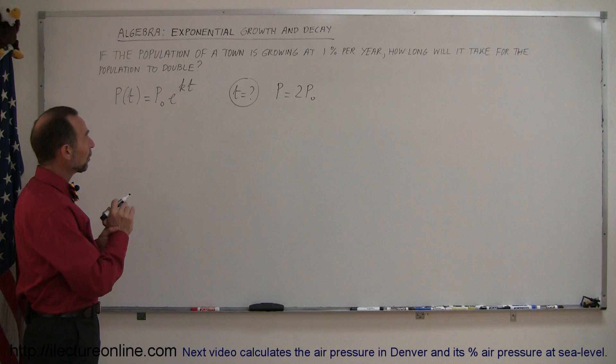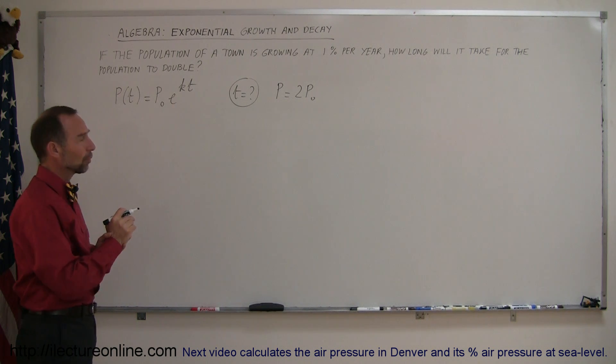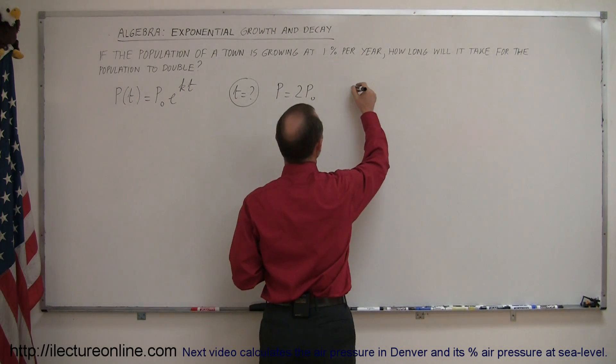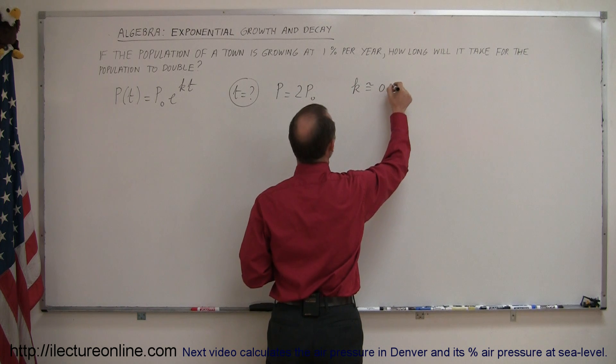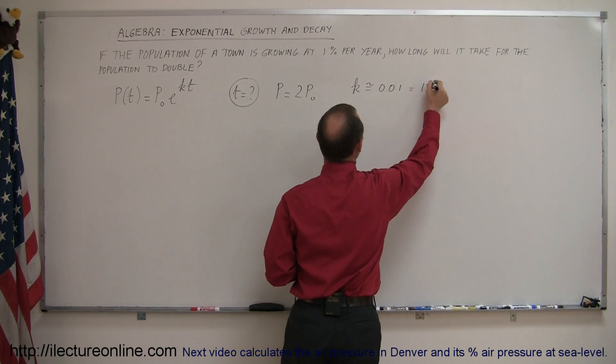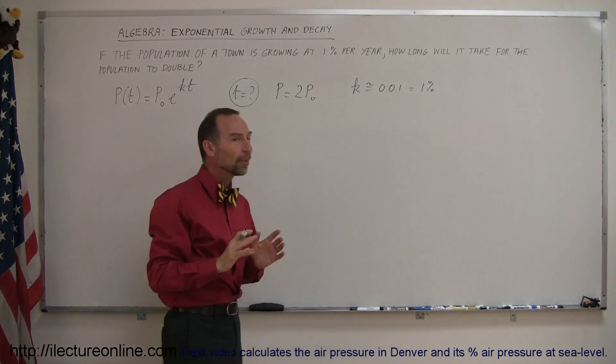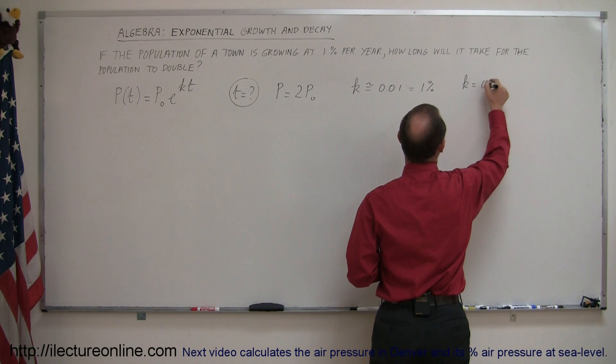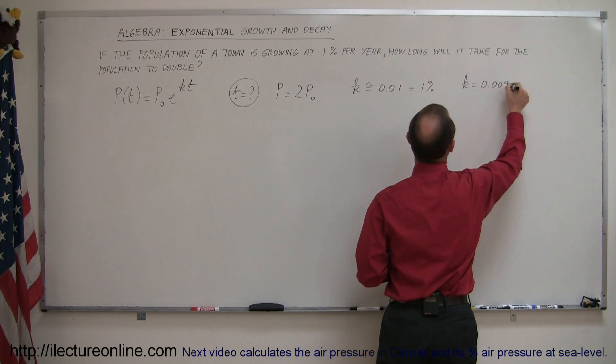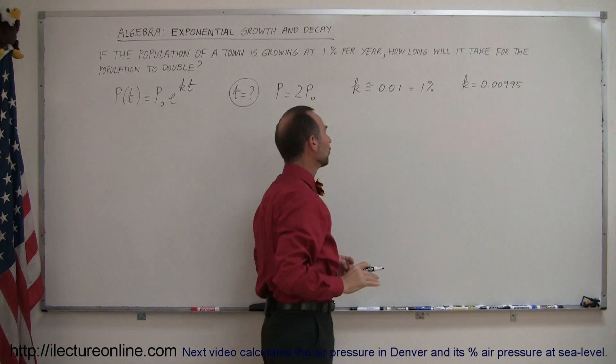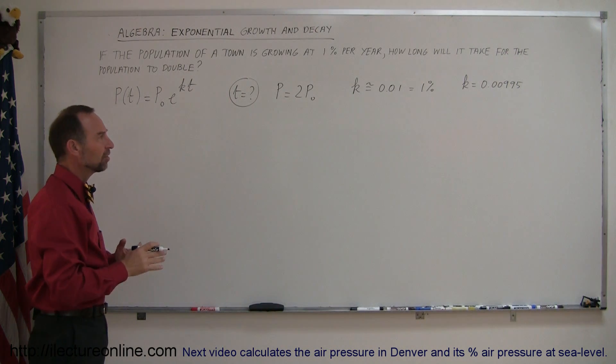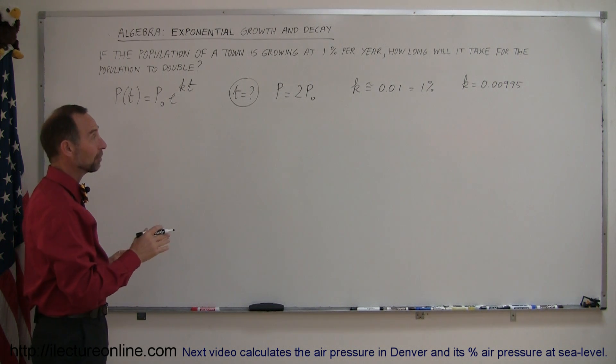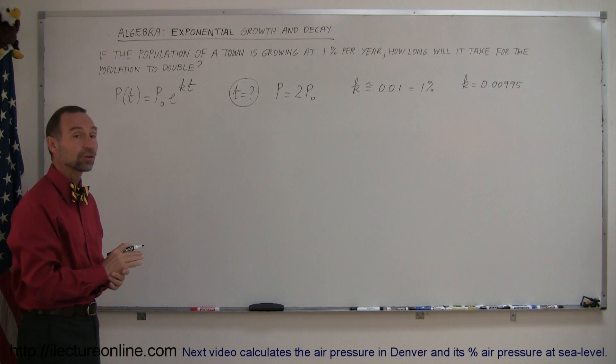We weren't given the value for k, but we were given the growth rate in percentage. And it turns out for small percentages, k is approximately equal to 0.01, which is the 1% growth rate. I said approximately because it's not exactly. For 1% growth rate, k is actually equal to 0.00995, which you can see is very close to 0.01. For small percentages, it's often okay to use the approximated value. Later on, I will show you an example of how to find the exact value for k, but for now, let's say that's good enough.